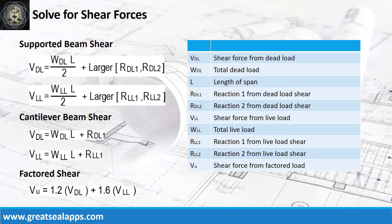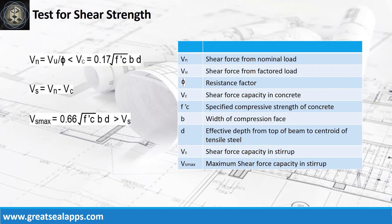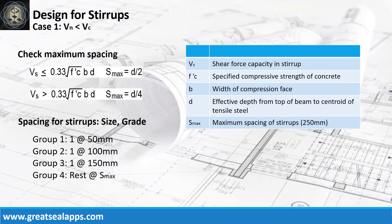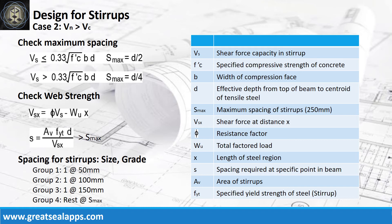Solve the factored shear force from dead load and live load shear force. Test for shear strength by comparing the nominal shear force to the strength capacity of concrete. If VN is greater than VC, additional shear capacity from stirrup VS is required and should be less than the maximum capacity VS_max. Case 1 is where shear from nominal load is less than shear from concrete capacity — follow the given spacing for stirrups. Use case 2 when shear from nominal load is greater than shear capacity of concrete and the initial spacing from web strength is greater than maximum spacing of stirrup — follow the given spacing for stirrups.